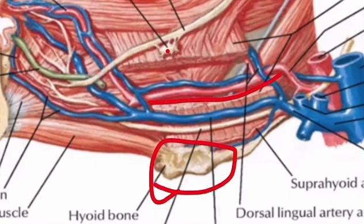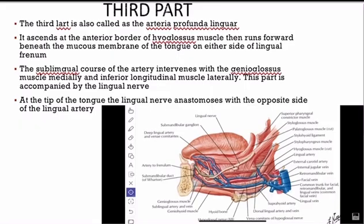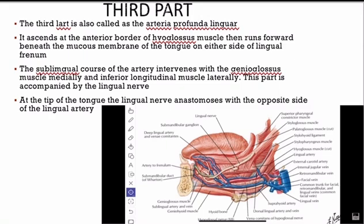Moving on to the third part, which is also called the arteria profunda linguae. It ascends at the anterior border of the hyoglossus muscle. Then it runs forwards beneath the mucous membrane of the tongue on either side of the lingual frenum. The sublingual course of the artery intervenes with the genioglossus muscle medially and the inferior longitudinal muscle laterally.